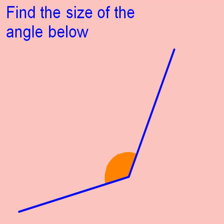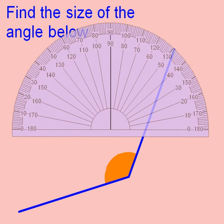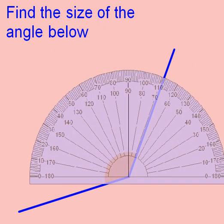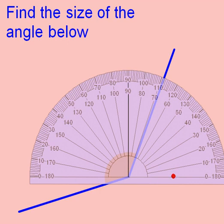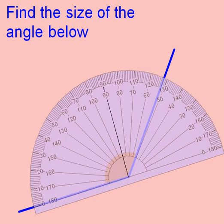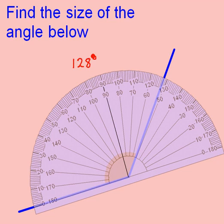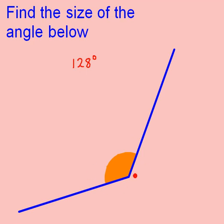I want to measure this angle now. I need my protractor and I need to move it into position. I now need to tilt the protractor so that the baseline lines up with the line of the angle. Now that my protractor is lined up, I can see that this time the zero is on the outside scale, so I'm going to use the outside scale to measure the angle. Going all the way round to 120 and then 8 more degrees, the answer is 128 degrees. I can check this by confirming it's an obtuse angle — more than 90 but less than 180.